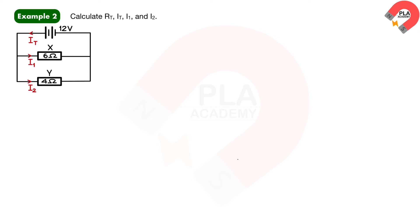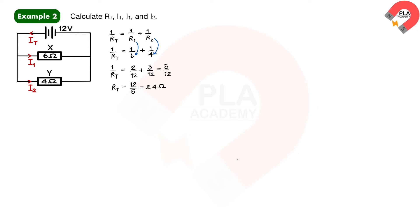Example 2: Calculate the total resistance of the circuit, current from the battery, and current into resistors X and Y. The diagram shows a parallel circuit. Using the parallel resistance equation, substituting R_1 equals 6 and R_2 equals 4, the total resistance is 2.4 ohms. In a parallel circuit, the potential difference across each resistor is the same and equal to the EMF of the battery. So EMF E equals V_X equals V_Y equals 12 volts. The battery current I_T can be calculated by substituting EMF equals 12 and R_T equals 2.4, giving I_T equals 5 amperes.